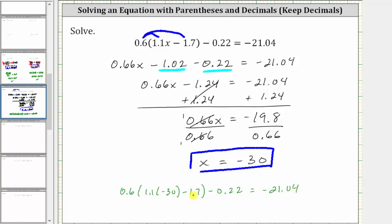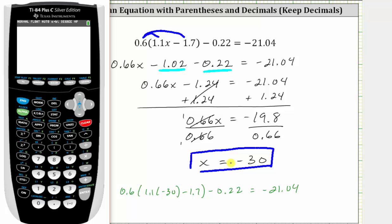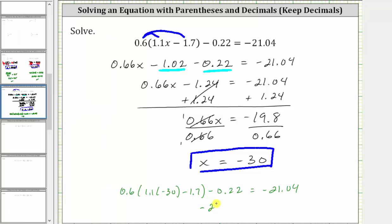And now let's evaluate the left side of the equation using the calculator. To evaluate the left side, we will enter the expression just as it looks here. And notice how the left side is equal to negative 21.04. And since negative 21.04 is equal to negative 21.04, we know our solution is correct.